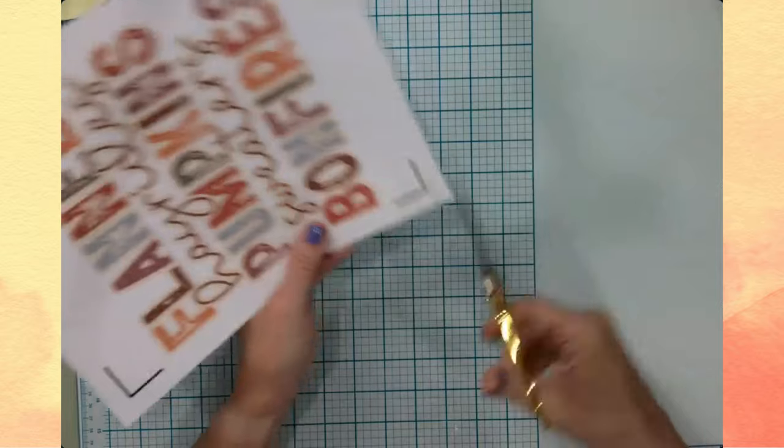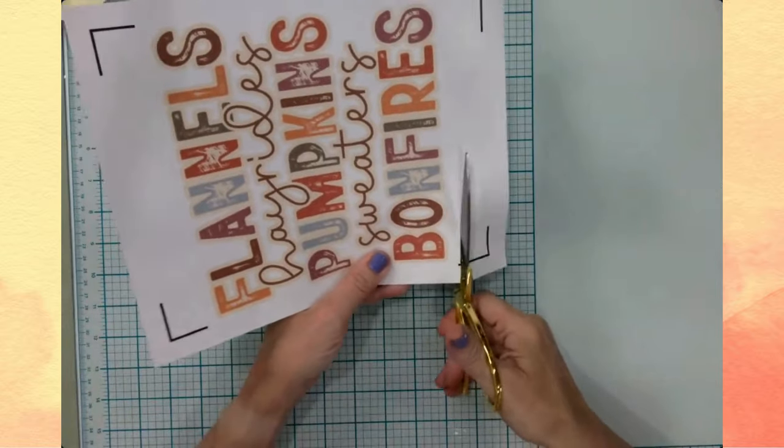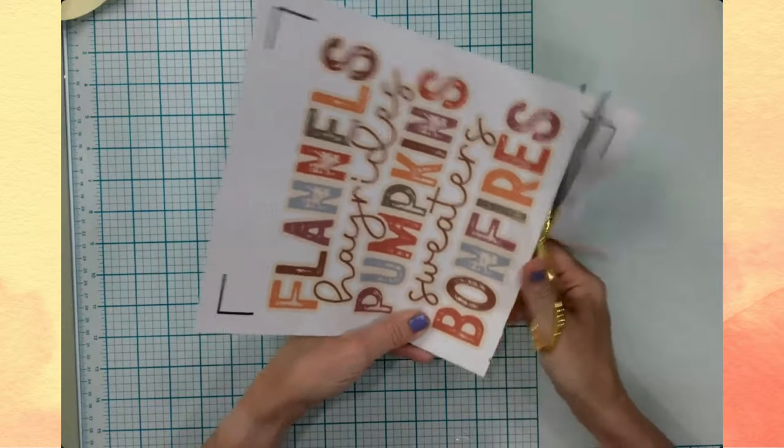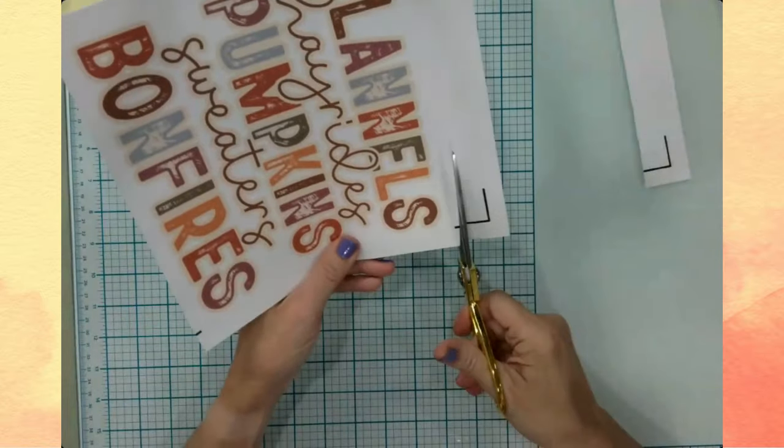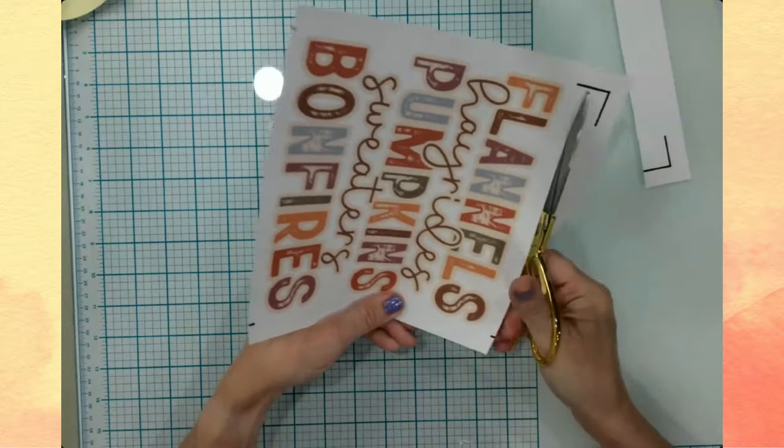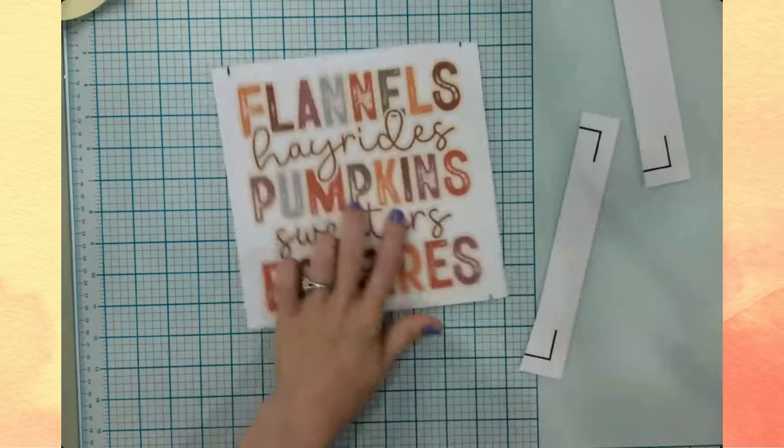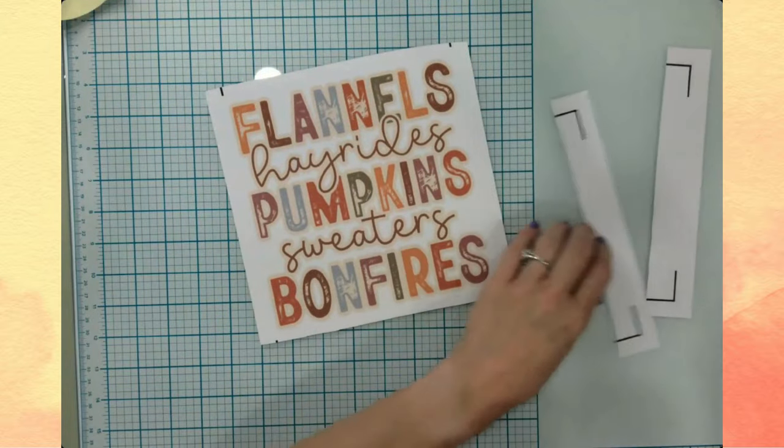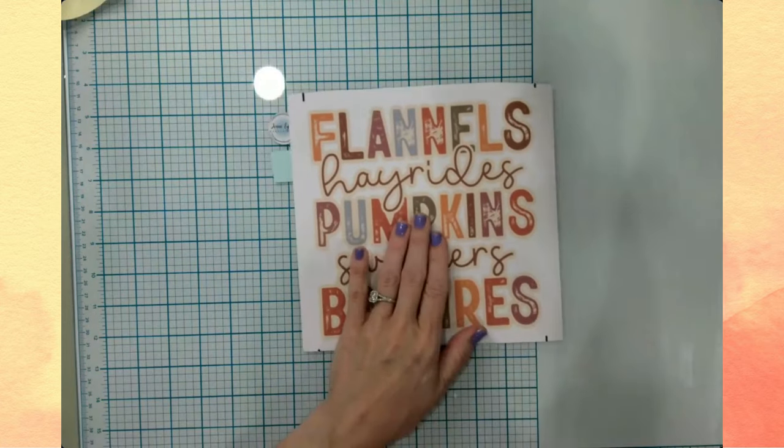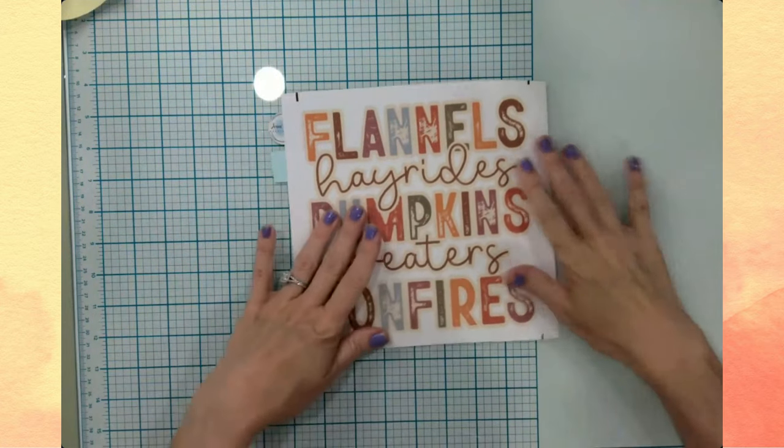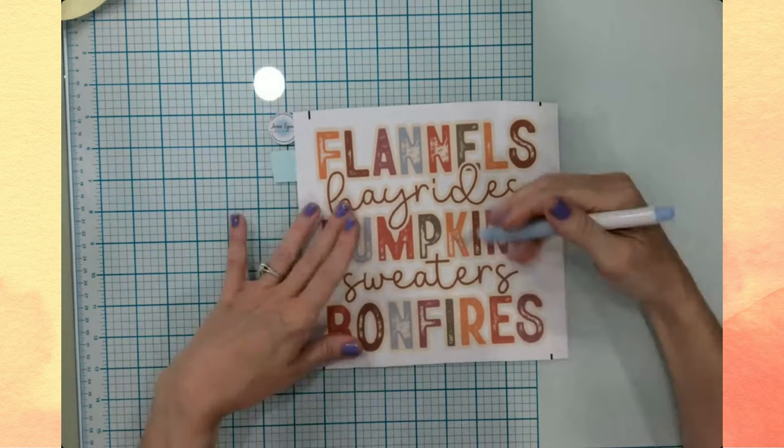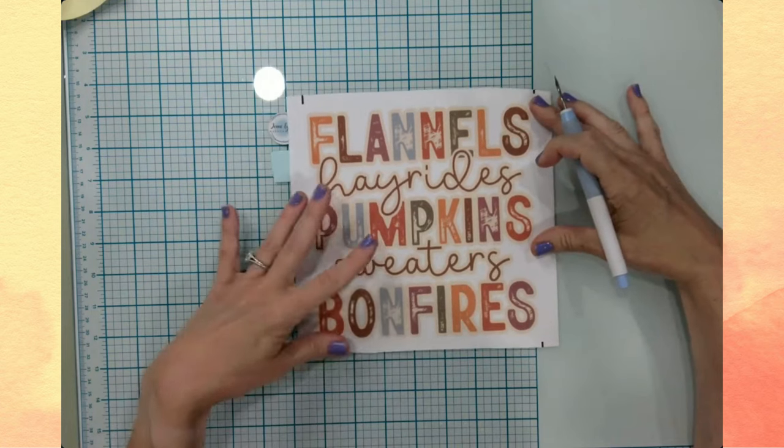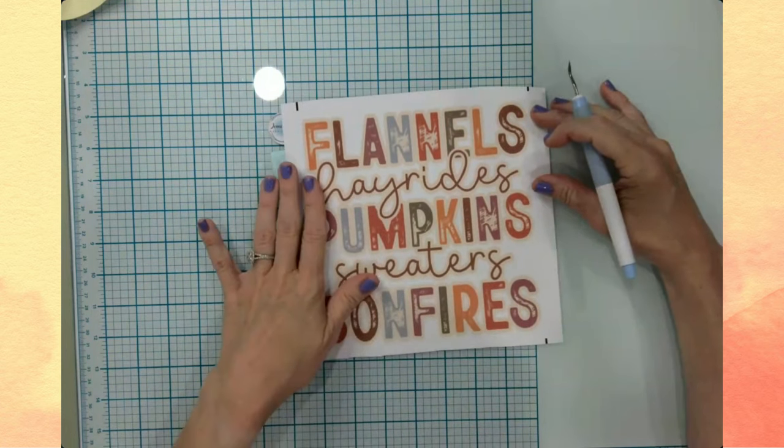Okay. So this is just another printable vinyl. And this did not come out of Design Space either. I will link this SVG down in the description for you. And so I basically did the same thing as the pumpkin, the flannels, hayrides, the words, the way they are, that was the SVG.